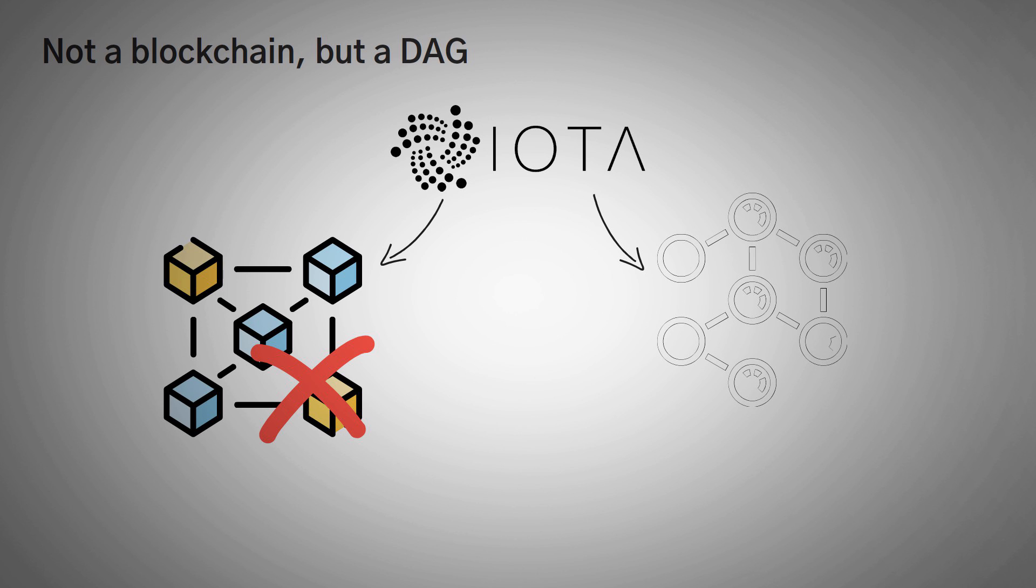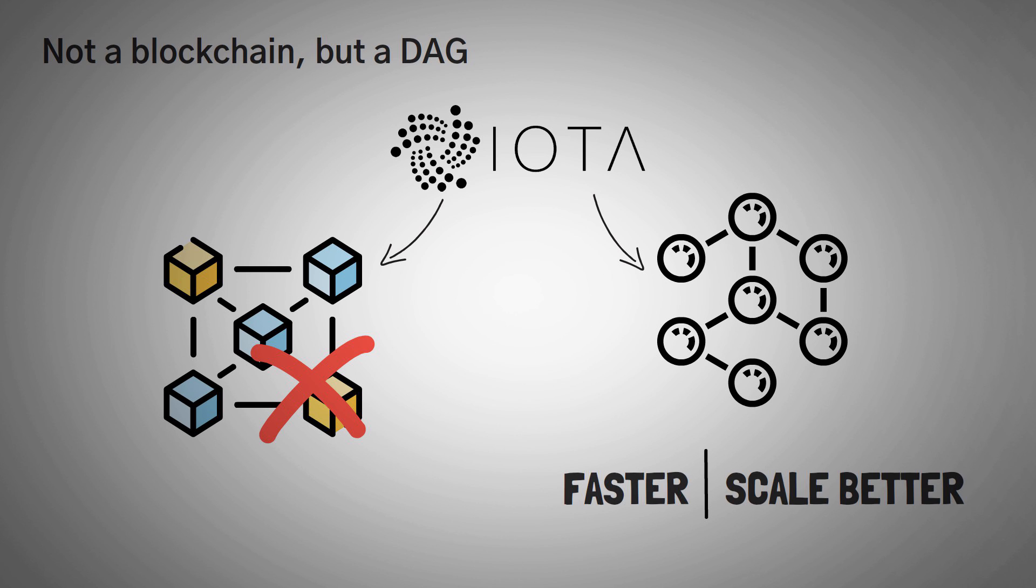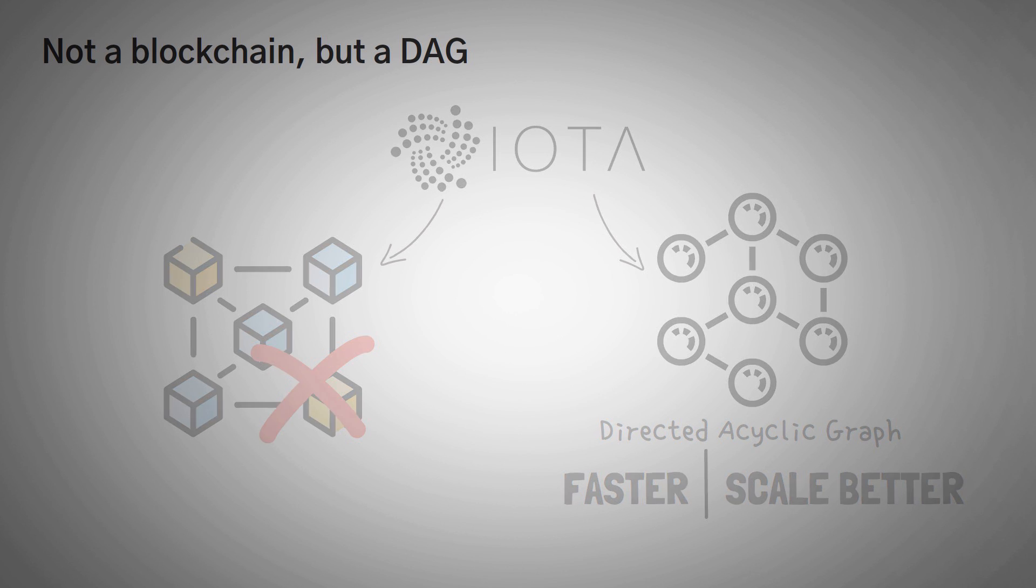First of all, IOTA is not a blockchain, but it is a DAG. If you don't know, DAGs are similar to blockchains, but much faster and can scale better, seeming to be the next evolution of blockchain technology. Now IOTA is a DAG, which stands for Directed Acyclic Graph. It could get very confusing if I tried to fully explain it here, but let's go over a brief overview of what a DAG is.